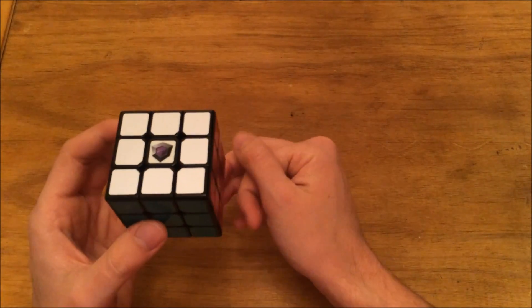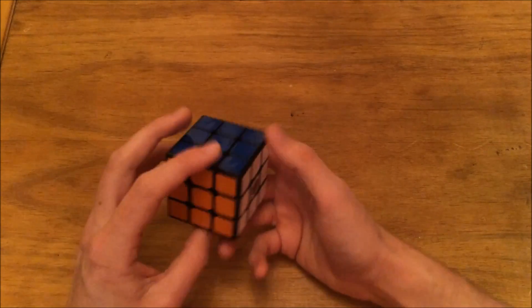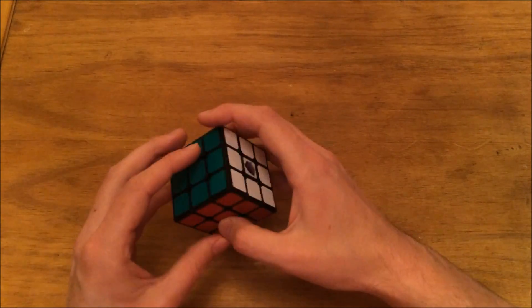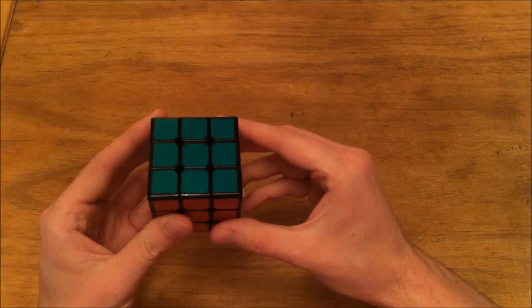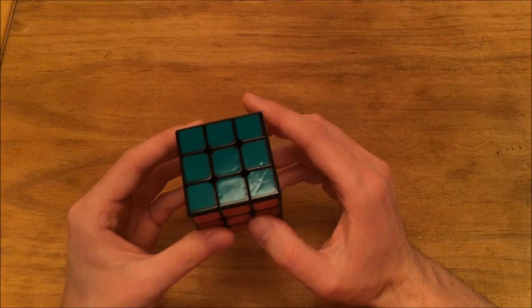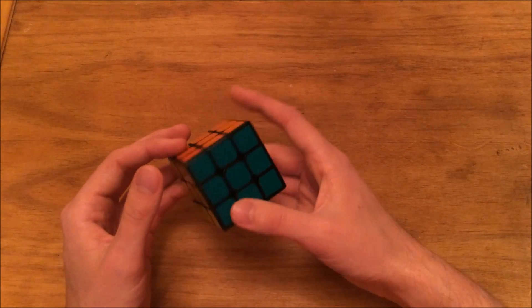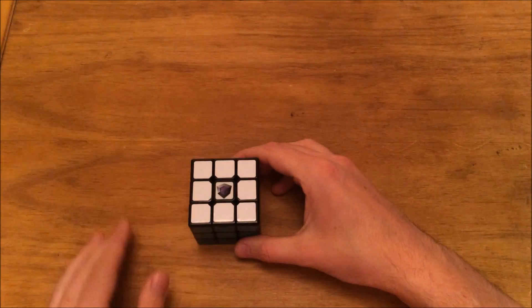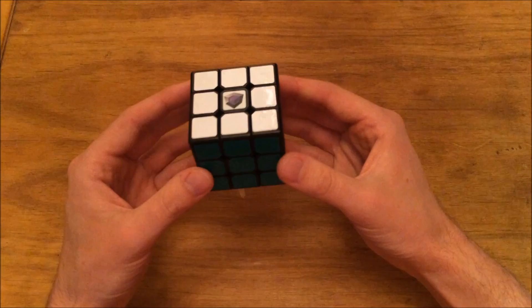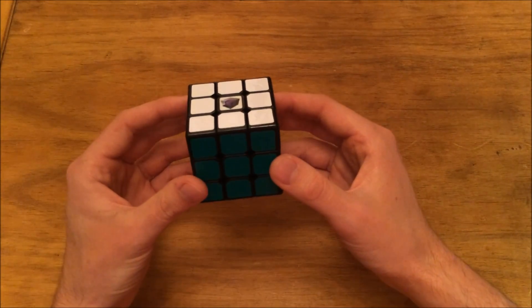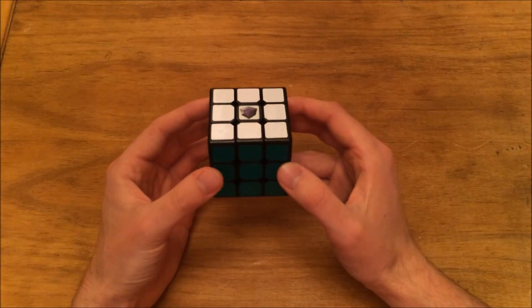So now that we've covered basic notation, what orientation do you scramble a cube in? Because you can't just pick it up and go. There's actually an orientation for scrambling it according to the World Cube Association regulations. That is starting with your white face on top and your green face on front facing you. So this will be your default scrambling orientation on the cube.